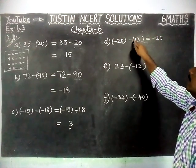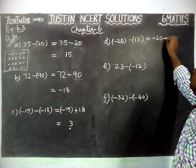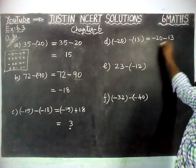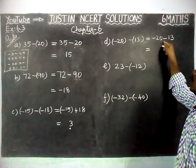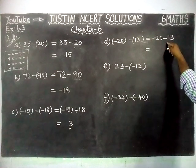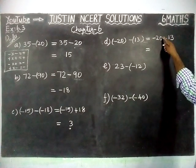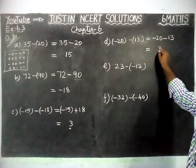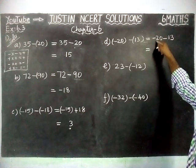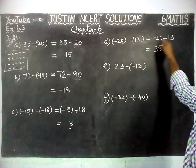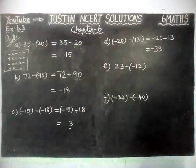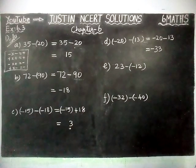Part D equals minus 20 minus plus 13. Minus into plus equals minus 13. Now both have the same sign — minus and minus — so we are going to add. 0 plus 3 equals 3, and 1 plus 2 equals 3. Both also have the same sign, so minus 33 is the correct answer for Part D.